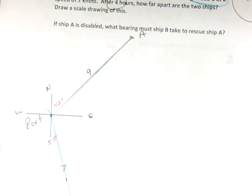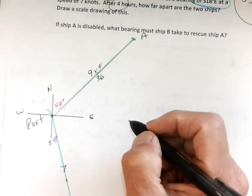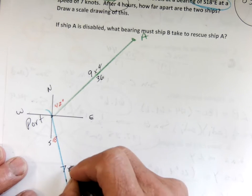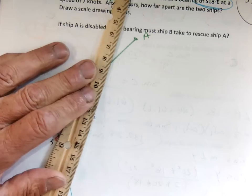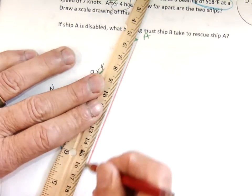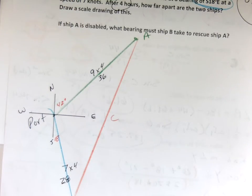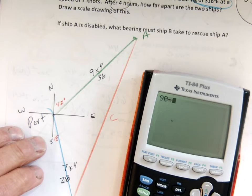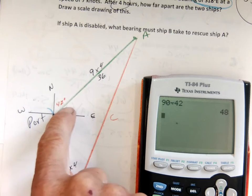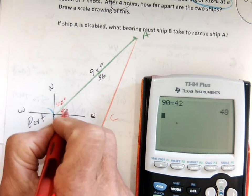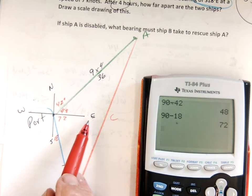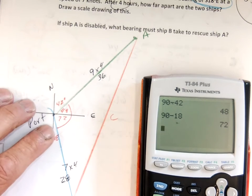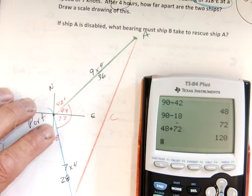They're going to go for four hours, so I'm going to multiply: nine knots becomes 36, and seven knots becomes 28. The distance apart I'll draw from A to B and call that C. I need the angle: 90 minus 42 gives 48 for that angle. And 90 minus 18 gives 72, because between north and east is 90 degrees and between east and south is 90 degrees. So my central angle is 48 plus 72 equals 120 degrees.